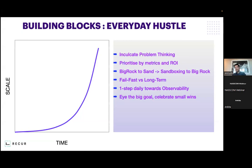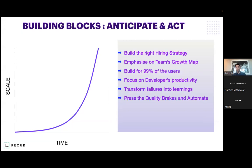Once we have defined our day zero strategies and done those everyday hustles, as a leader, we can anticipate and then act. The first important point is build the right hiring strategy. Define how many people you actually need, rather than blindly going — let's hire for now and see later. The second thing is hire people who are smarter than you. Amazon, Google, Uber all say it — hire people who are smarter than you. Trust me, when you hire people smarter than you, they challenge you to your core, which makes the system even better. Don't shy away from hiring people smarter than you.